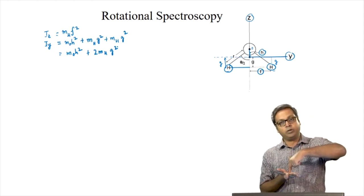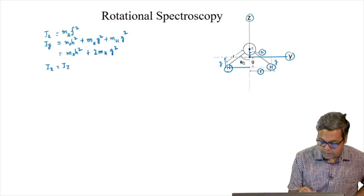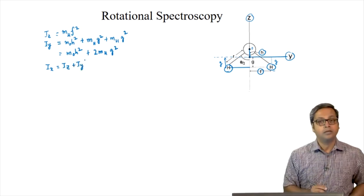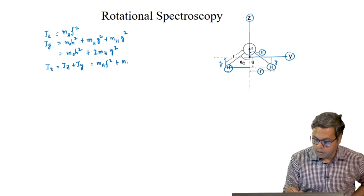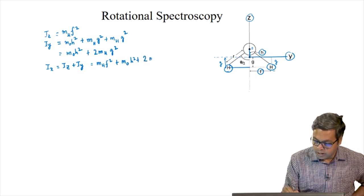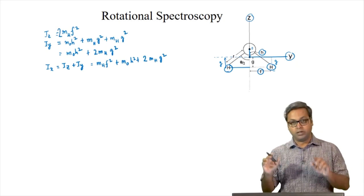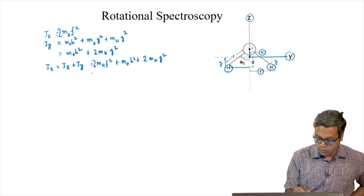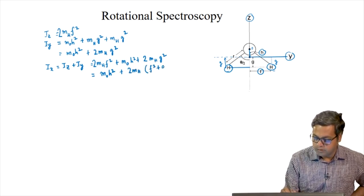For any planar molecule, the out-of-plane moment of inertia equals the sum of the two in-plane moments of inertia. So I_X equals I_Z plus I_Y. We can write this as M_H F squared plus M_O H squared plus 2 M_H G squared. Note: I_Z should have a factor of 2 for the two hydrogen atoms, so it should be 2 M_H F squared. Thus, I_X equals M_O H squared plus 2 M_H (F squared plus G squared).